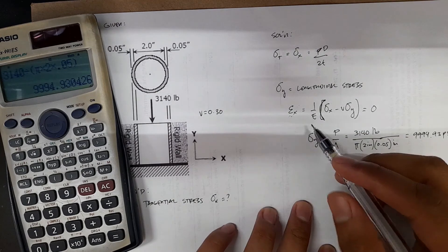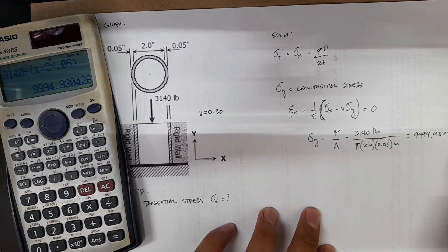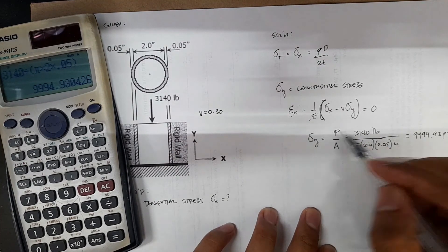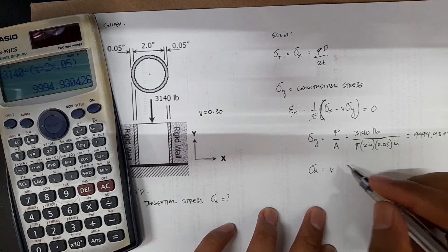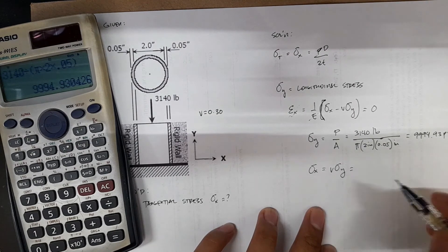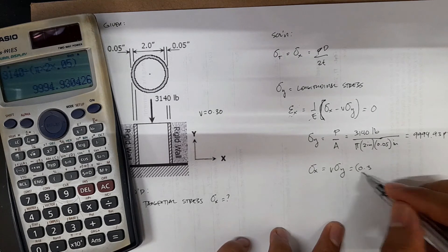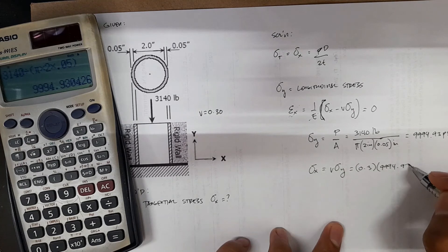Now calculating for stress x, where strain x equals zero. Since this is zero, it will be canceled out. You have stress x equals v times stress y, which equals 0.3 times 9,994.93 psi.